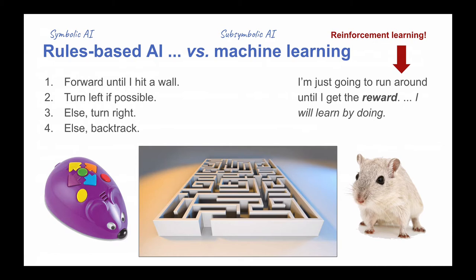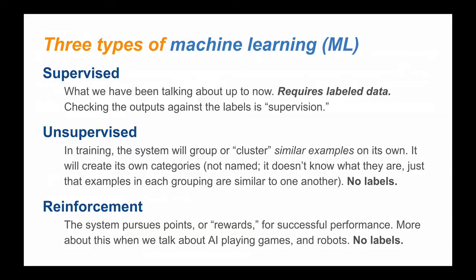It takes a lot of episodes before a reinforcement-trained system is any good. An episode is one incomplete session that ends with the system learning something — meaning it received a reward. We previously talked about good old-fashioned AI, or GOFAI, which used strictly programmed rules. Reinforcement learning is not like that.